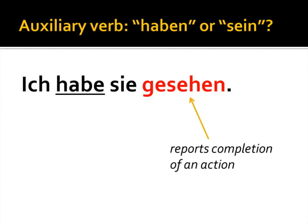Otherwise, if the past participle shows some type of completed action — like 'Ich habe sie gesehen' ('I saw her/them') — where there's no motion and no change involved, we simply use some form of the verb haben as the helping verb.